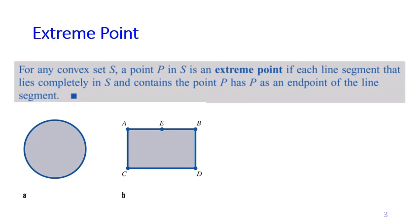If we have a convex set S, we call point P an extreme point if any line inside S that contains P always has P as the endpoint. For example in the circle, suppose this is our point P and we have three lines that contain P — we see that this point always becomes the endpoint of each line. So P is an extreme point. In fact, for the circle, all points on the circumference are extreme points.